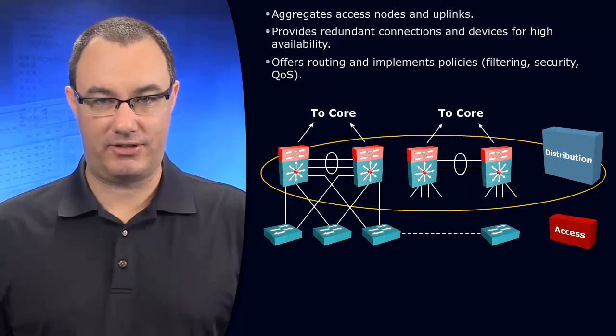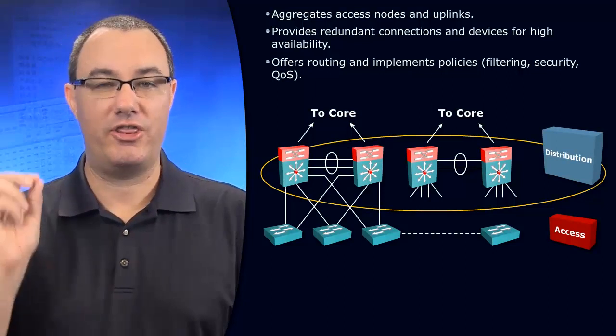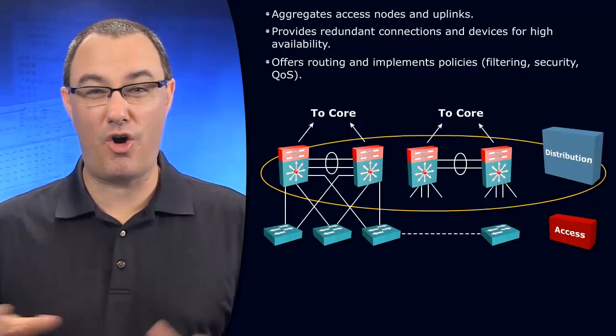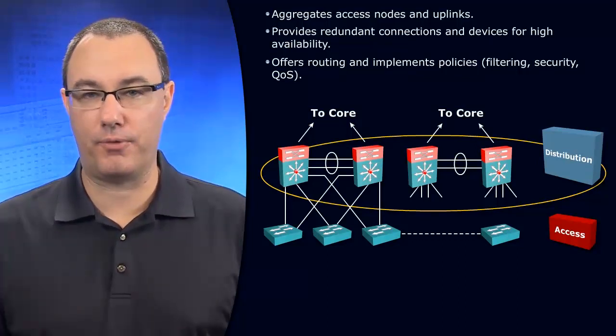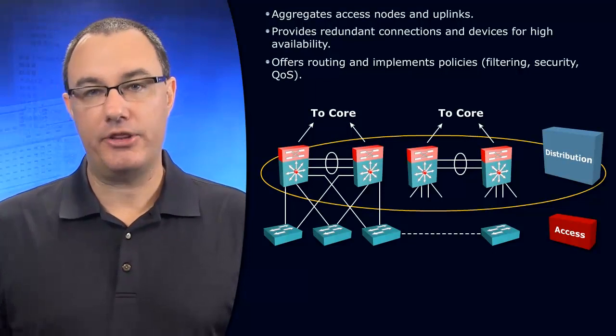Why? Well, we don't want the core to do anything fancy for us - high speed, all that jazz, that's the core. The distribution layer, this is about doing all the nasty work for us: route summarization, access lists for security, that sort of thing.